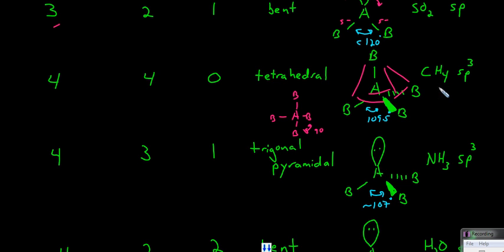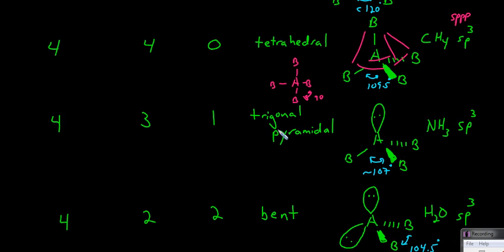Here we have four total things around the central atom, and having four total things, we get four letters — SPPP or SP3. In our next case, we have three bonded atoms around the central atom and a lone pair. The geometry is very similar to the previous case, but we call it a trigonal pyramidal geometry.